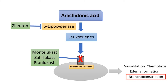Let us make the names a bit easier to memorize. All of these drugs have 'leu' in their names: zileuton, montelukast, zafirlukast, and pranlukast — indicating that they are leukotriene inhibitors. Also, all the leukotriene receptor antagonists have the suffix '-lukast' in their names: montelukast, zafirlukast, and pranlukast. So if there is 'leu,' it's a leukotriene antagonist, and if it ends in '-lukast,' it's a leukotriene receptor antagonist.